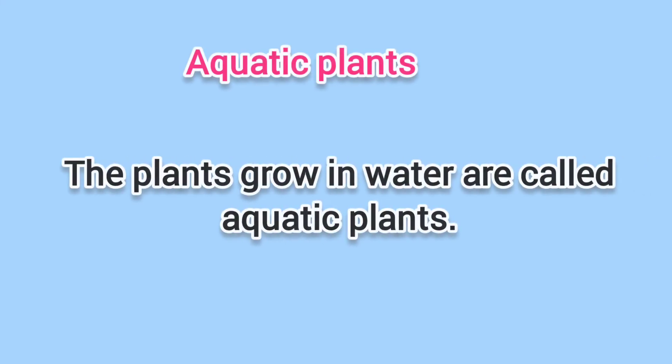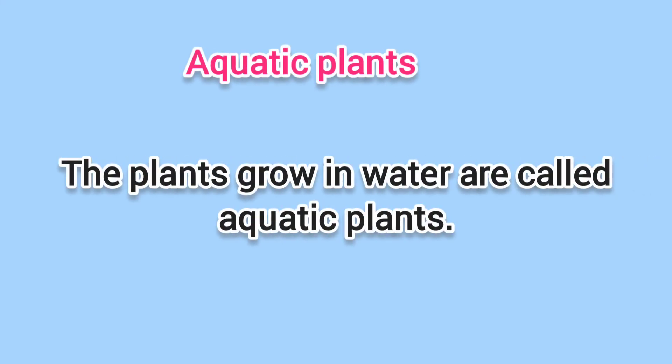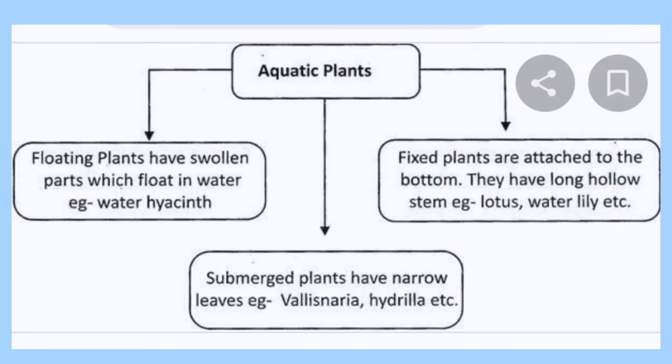The plants that grow in water are called aquatic plants. There are three types of aquatic plants: floating aquatic plants, fixed aquatic plants, and underwater aquatic plants.